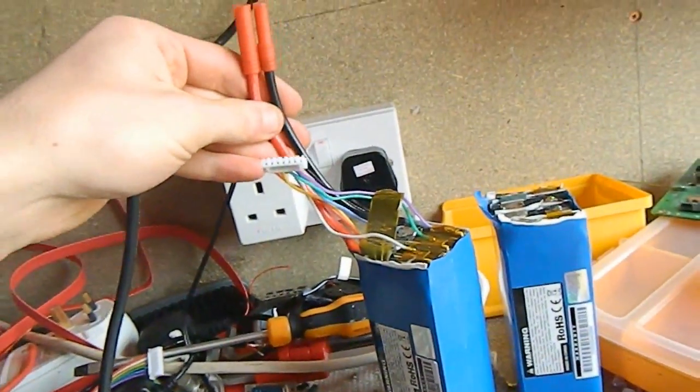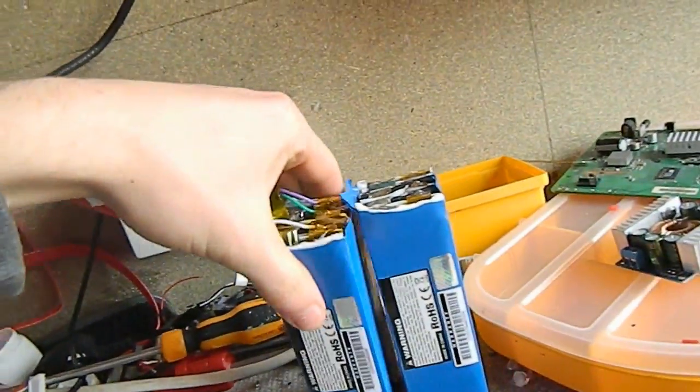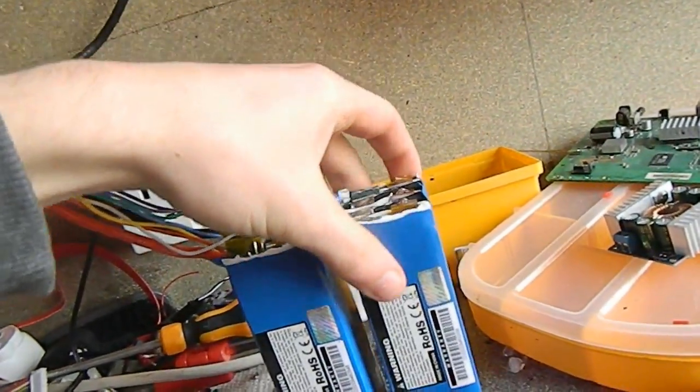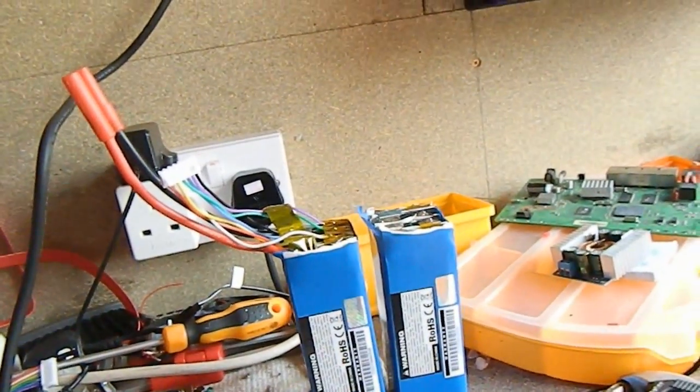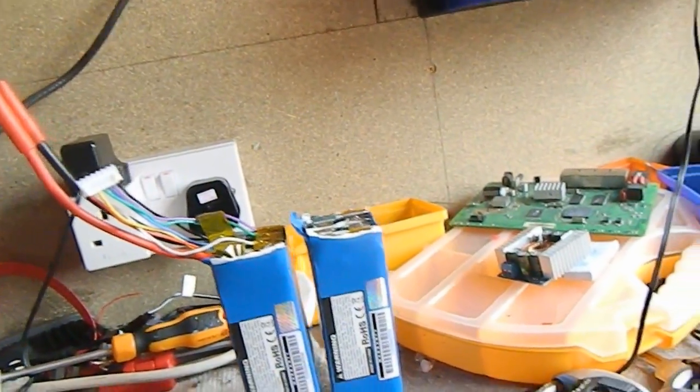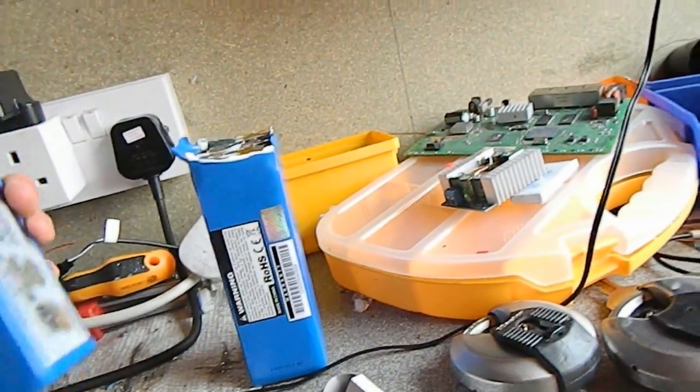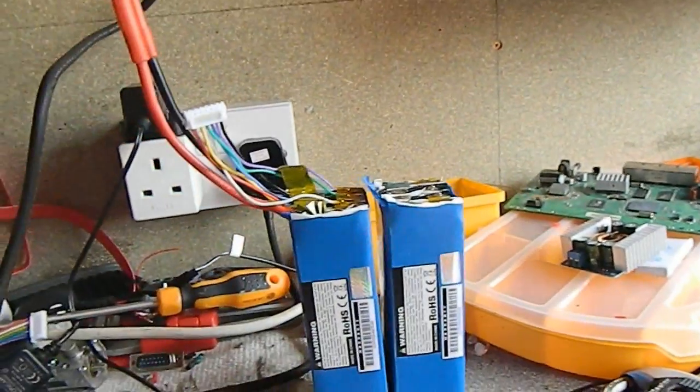And then use these 10 gauge cables that come with them to solder up the main positive and negative of the packs in parallel. That's going to give us about 600 watt hours of battery at 44.4 volts. We'll give that a test after it's finished.